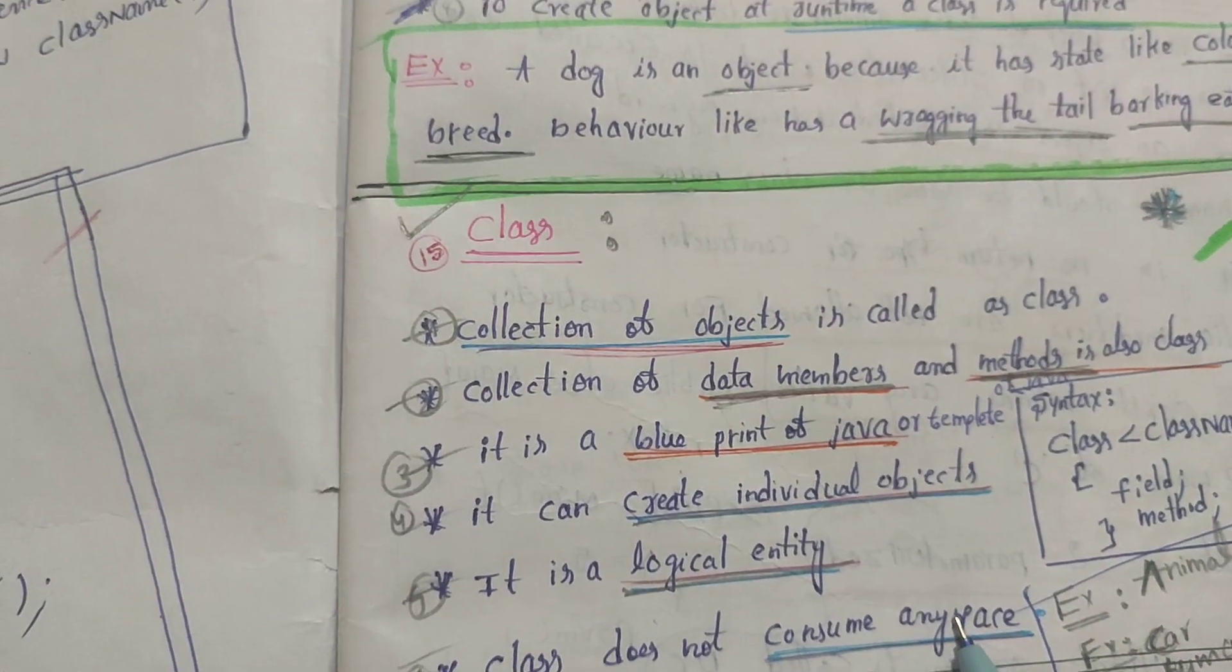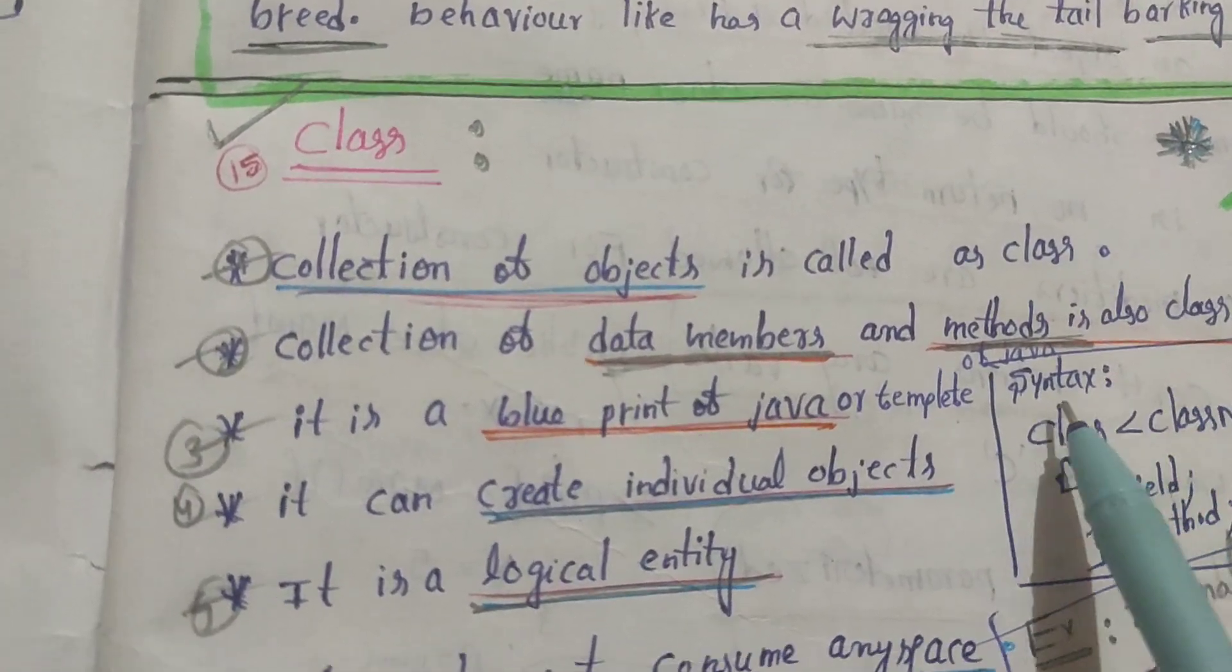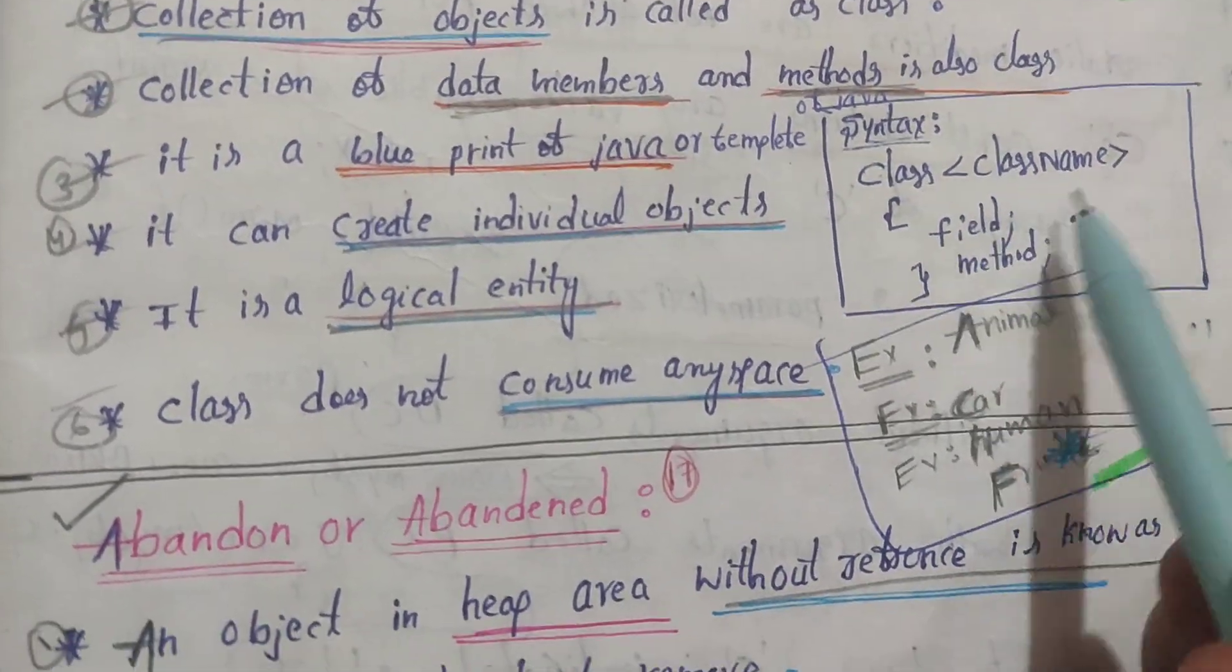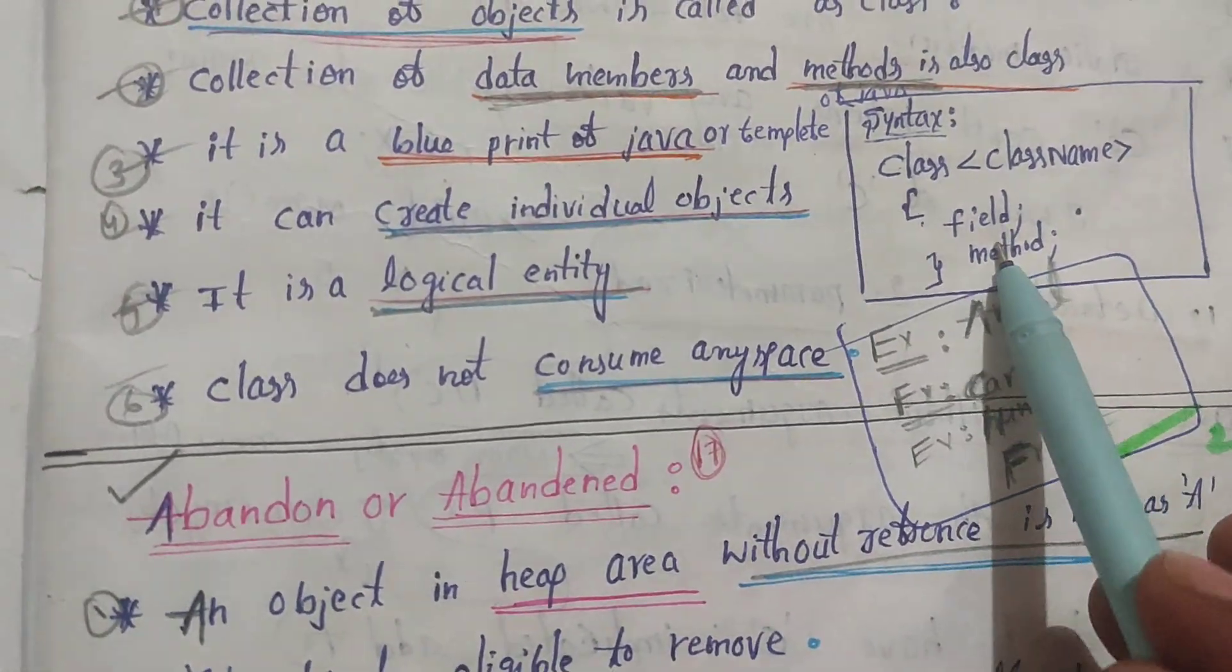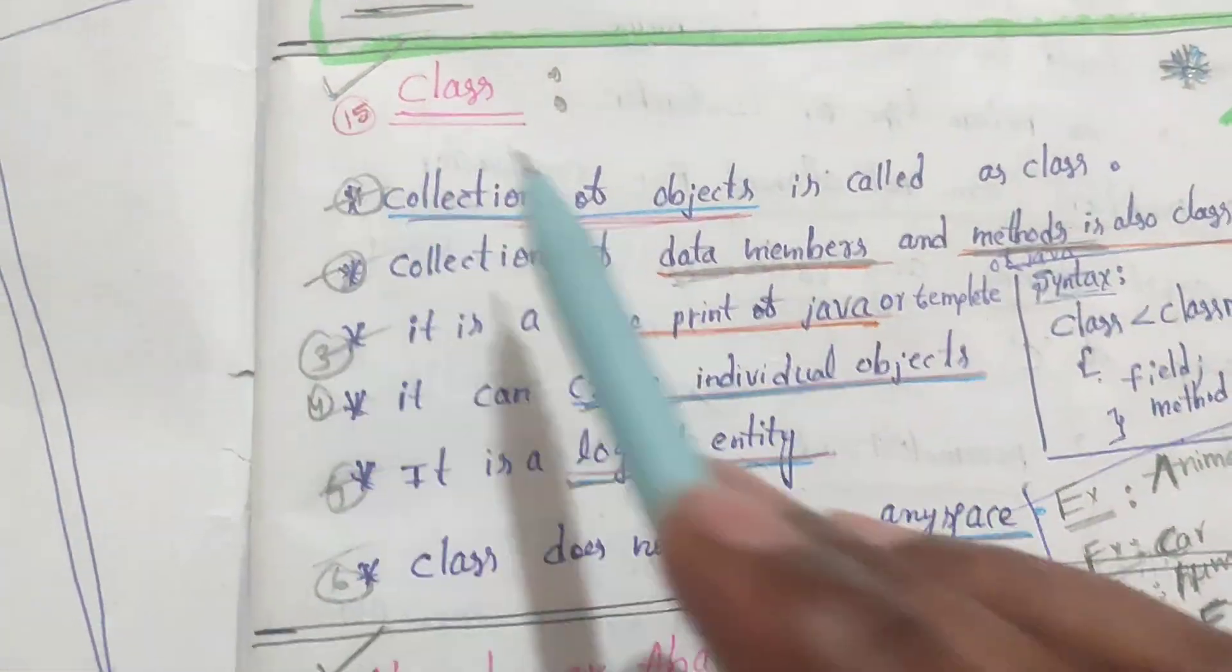Let's consider the class syntax: class, class name, opening brace, field and methods - this is the syntax for the class.